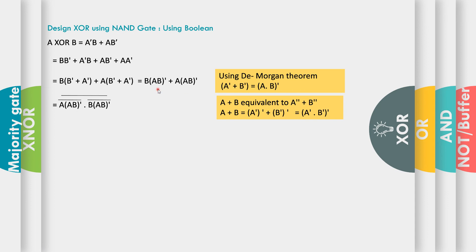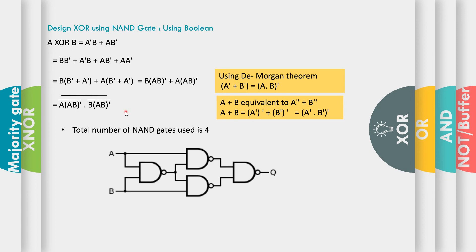Using this equation, (first-input bar · second-input bar) whole bar, we can realize our XOR gate using NAND gates. One gate is required for A·B bar, a second gate for A·(A·B) bar, a third gate for B·(A·B) bar, and a fourth NAND gate for the final output. So the total number of NAND gates used is four — fewer than the previous five-gate implementation.